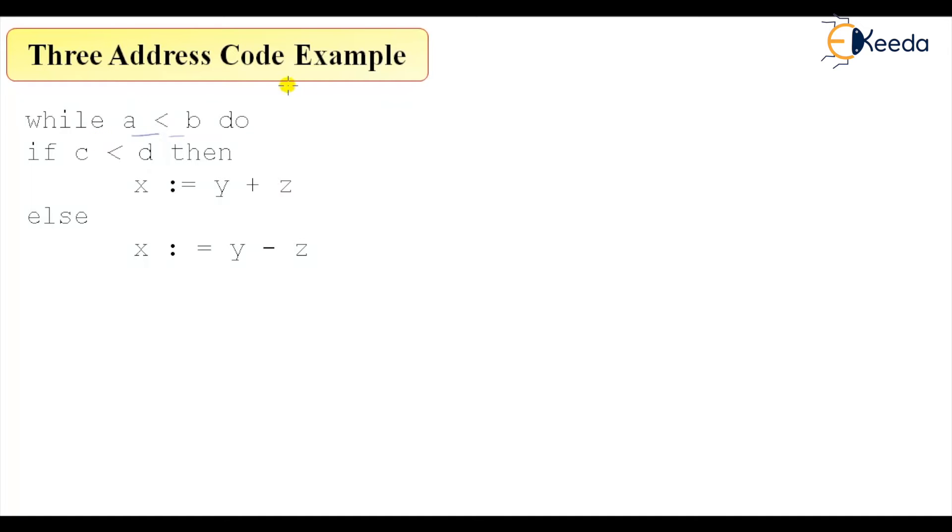Previously we have seen single statements, but now here we have a while loop. The condition is that if a less than b, then you keep on executing this particular block. And within the block also we have a statement something like c less than d, then x equal to y plus z.